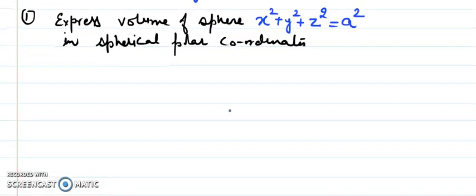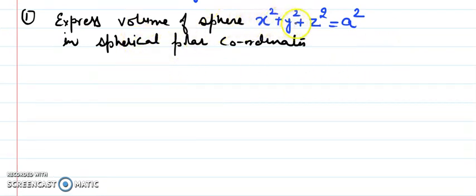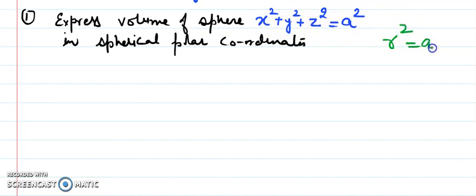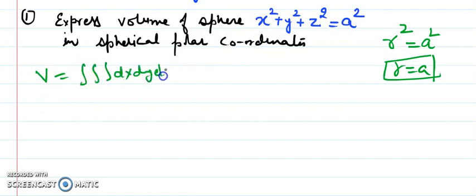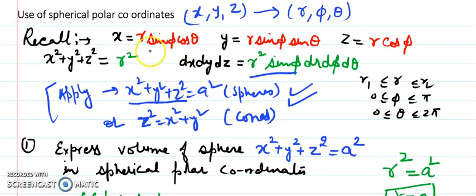Let's look at a question: express the volume of a sphere x²+y²+z²=a². First, since x²+y²+z²=r², we get r²=a², so r=a — a sphere of radius a. The volume formula starts as the integral of dx dy dz, and substituting x=r·sin(φ)·cos(θ), y=r·sin(φ)·sin(θ), z=r·cos(φ)...